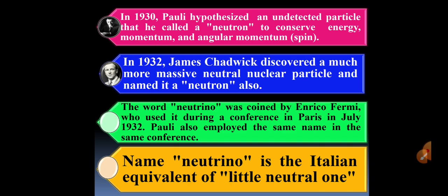In 1932, James Chadwick discovered a much more massive neutral particle and named it a neutron. The word neutrino was coined by Enrico Fermi, who used it during a conference in Paris in July 1932.